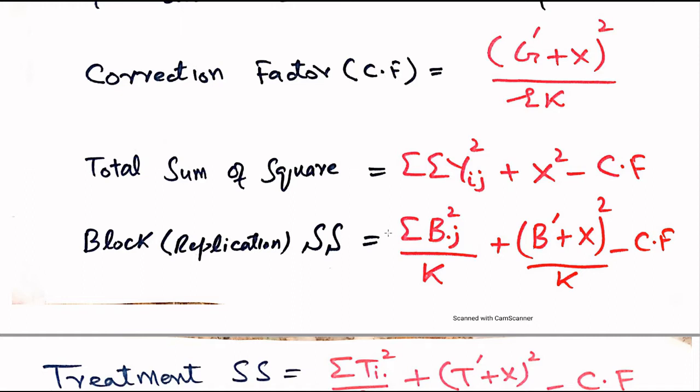Total sum of squares is the double sum of yij squared — meaning the square of each term — plus x squared, because x is missing so it was not included in the yij squared sum, minus the correction factor.